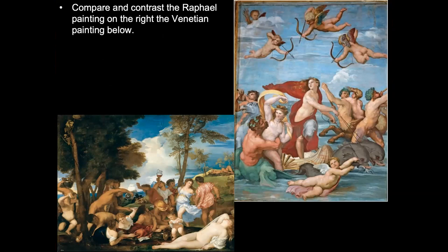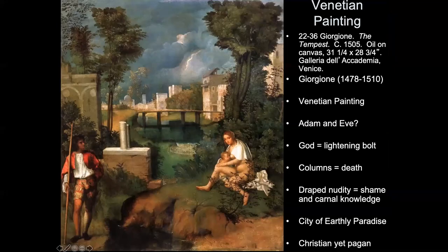Now would be a good time to pause and compare and contrast Raphael's style with what you'll see in the Venetian style. The Venetian painting was being made at the same time as the High Renaissance art we've been looking at, but it has an influence that's bigger than a lot of the other artists so far. The first artist we'll look at, considered the first in this style, is Giorgione — though some of his paintings may have also been done by his student Titian.